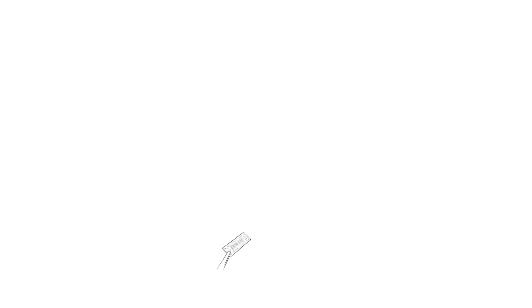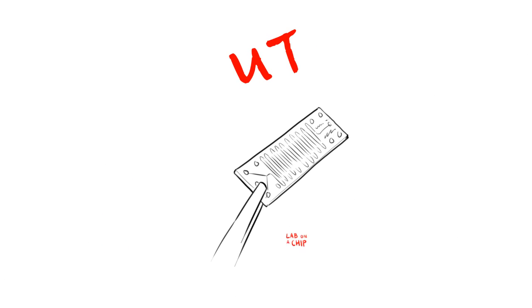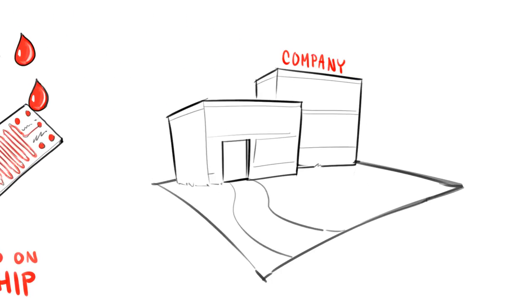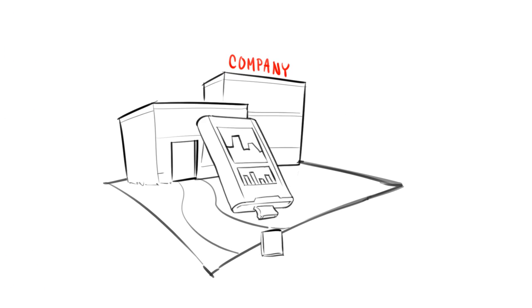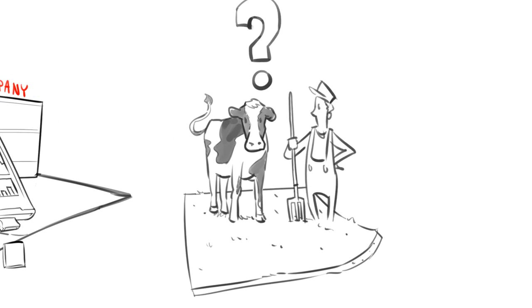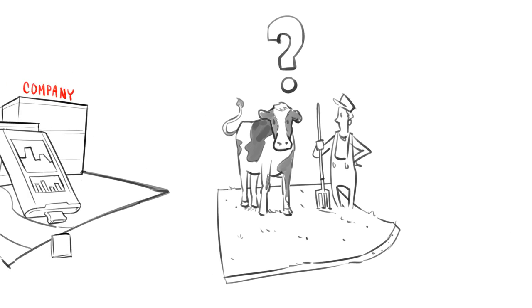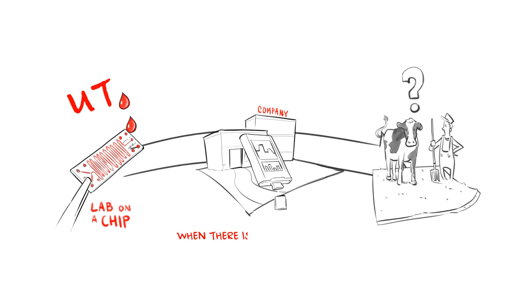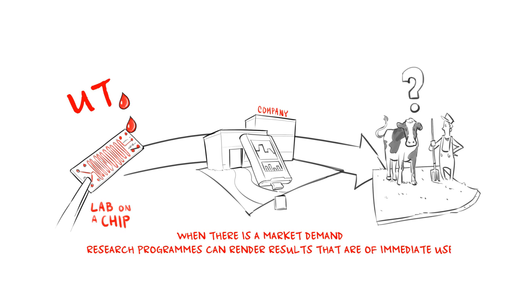In Twente, researchers from a government-funded lab worked on lab-on-a-chip technology for blood analysis. If successful, this meant samples could be screened very quickly. After that, with scientists from Twente University, a company was formed that now offers a mobile laboratory for veterinarians. Cows can now be diagnosed for some common diseases in a matter of minutes rather than days or weeks. This shows that when there is a market demand, research programs can render results that can be of immediate use. It also shows that researchers themselves can take an active role in the commercialization of a technology.